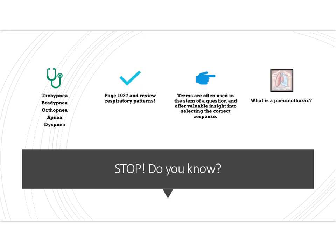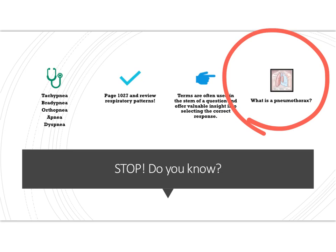Page 1026 also covers conditions such as pneumothorax. A pneumothorax is when air is allowed to enter into the pleural cavity, causing the lung to not be able to fully expand. You can see from the picture that this would produce certain signs and symptoms in your patient.